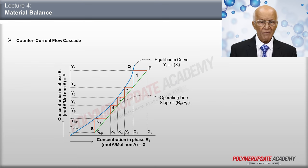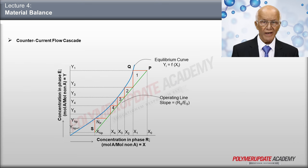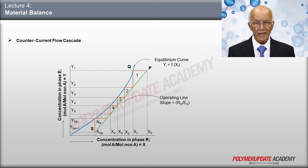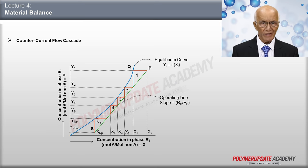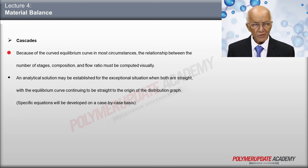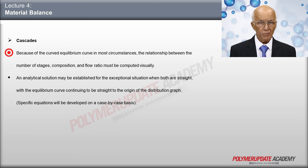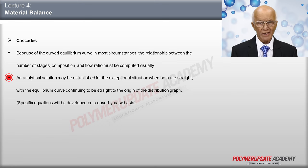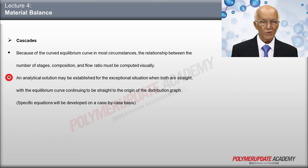This is the graphical representation of what happens in a counter-current flow cascade. You can see that we can draw a number of stages graphically. First, we draw the equilibrium curve y versus x, and then draw the operating line with slope RS/ES, passing through the points (x0, y1) and (xNp, yNp+1). We can then step off the various stages required. For most cases, because of a curved equilibrium curve, the relationship between number of stages, composition, and flow ratio must be determined graphically. For the special case where both the operating line and equilibrium curve are straight lines continuing to the origin of the distribution graph, an analytical solution can be developed. Specific equations will be derived on a case-by-case basis.